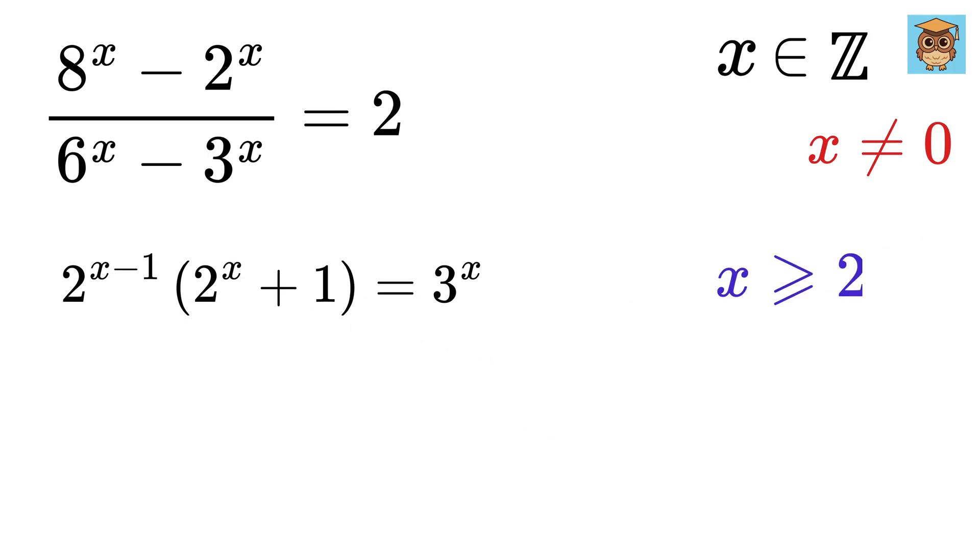Now, for all x greater than equal to 2, we find that this term will always be even. And this term 2 to the x will be even. But plus 1 will make this whole as odd. And 3 to the power of x is always odd.